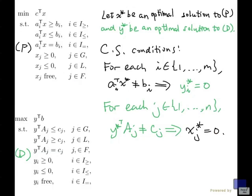So what it is saying is, if x star and y star are optimal solutions for P and D respectively, then they must satisfy these conditions.